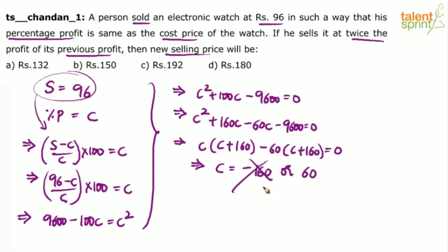So the cost price is either minus 160 or plus 60. Since cost price cannot be negative, the cost price must be the positive value: 60 rupees. Now, selling price is 96 and cost price is 60, so profit is S minus C, which equals 96 minus 60, giving 36 rupees.